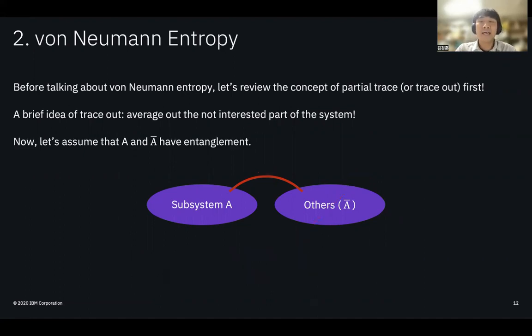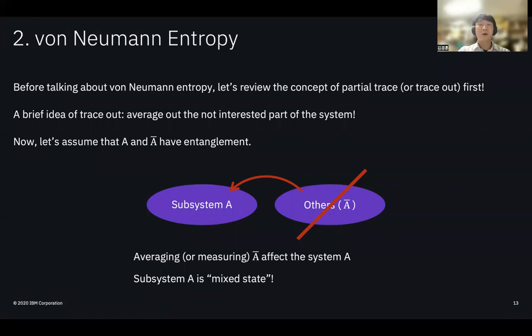On the other hand, if A and A-bar are entangled, now averaging out the A-bar affects A, since measurement on A-bar affects A. Now some of the quantum probabilities of A change to classical probabilities. So now A is not a pure quantum state. We physicists call this kind of state mixed states.